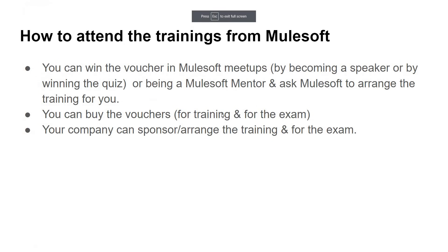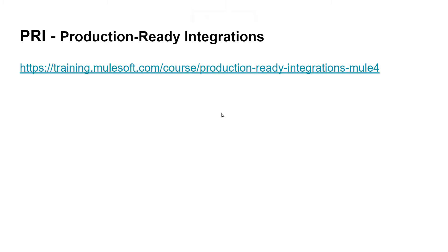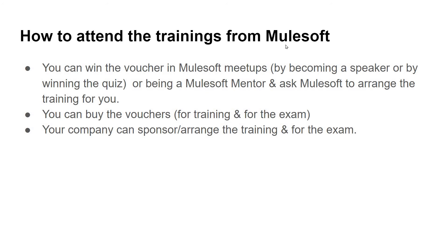Now let's see how to attend the trainings. You can win a voucher at any MuleSoft meetup — either by being a presenter or speaker, or by winning the quiz they conduct (generally three vouchers are given to quiz winners). If you are a MuleSoft mentor, you can book one training per quarter. These are three ways to get a voucher for free from MuleSoft.